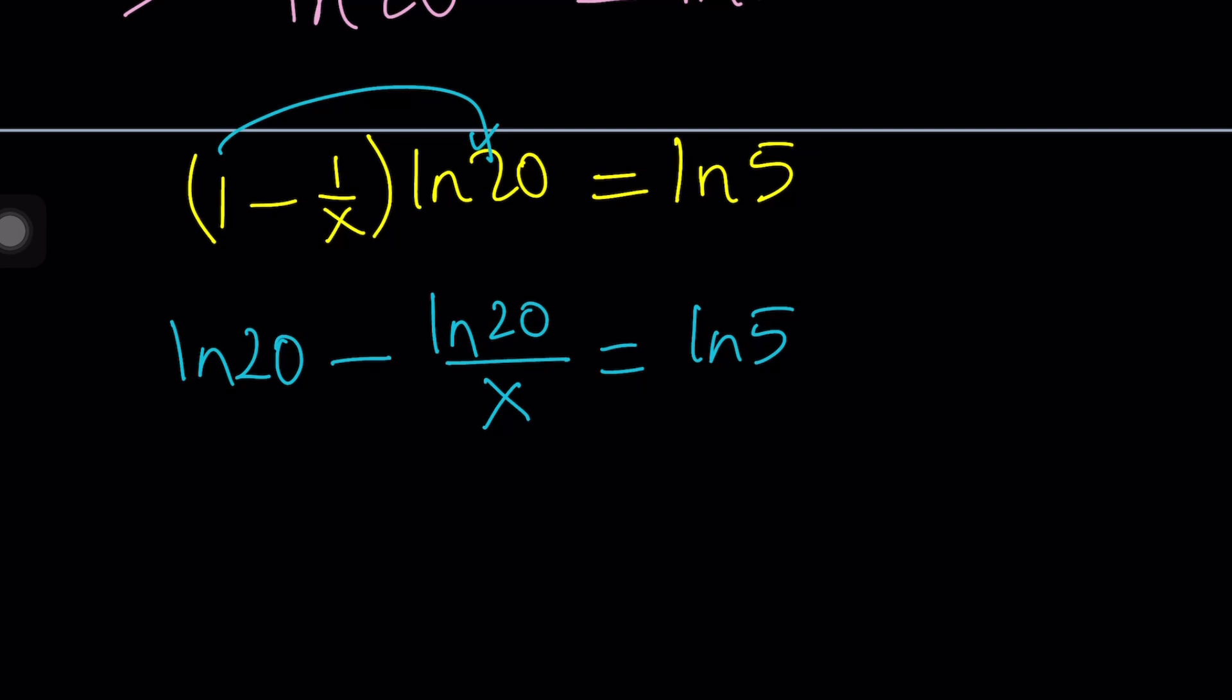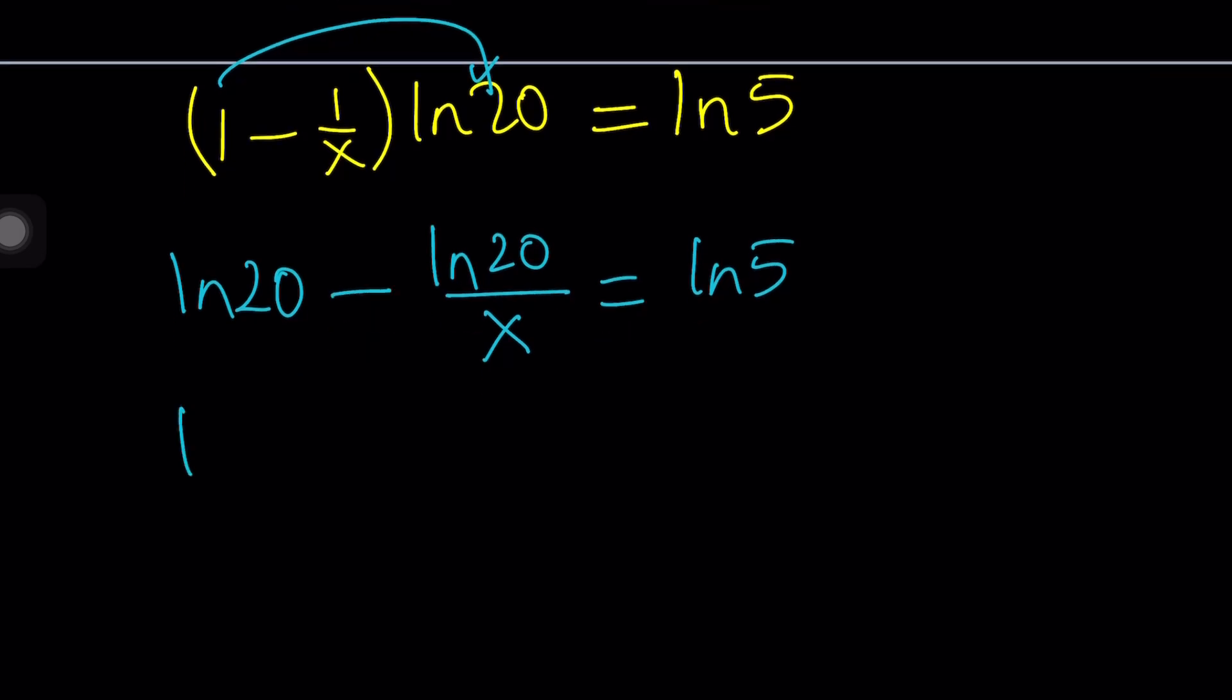Now, notice that we only have x in one of the terms, so we can try to isolate it and bring the constants together. ln 20 and ln 5 are constants. And they go really well together. You know why? Because we have a property, a quotient property with logarithms. Why do I call it a quotient? Because we have the difference of two logs that turns into the log of a quotient. Remember the property?